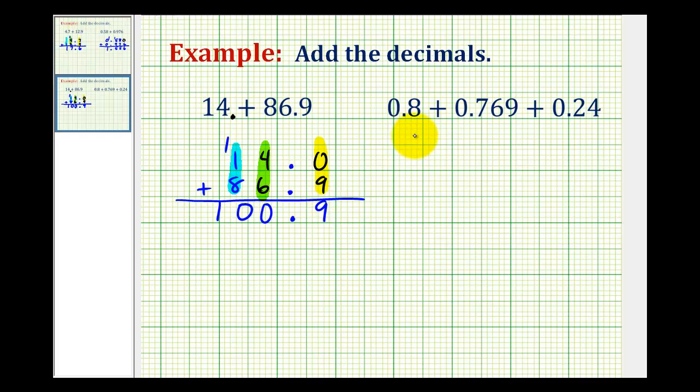For our last example notice how we have three decimals but the steps will be exactly the same. We'll rewrite this vertically lining up the corresponding place values. So we'll have 0.8, 0.769, and 0.24.